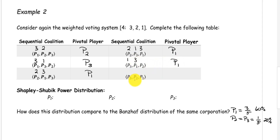And the last sequential coalition with players 3, player 2, player 1: player 3 has a weight of 1, player 2 has a weight of 2, and we still have not met our quota of 4. So we need to add in player 1 with their weight of 3, and now we have a total weight of 6, which meets the quota. So player 1 is pivotal in that sequential coalition.